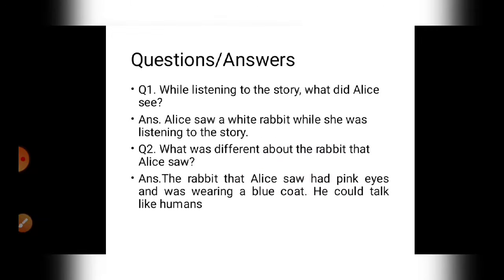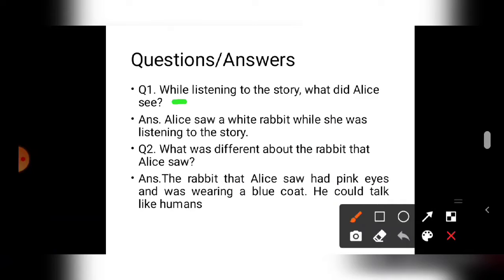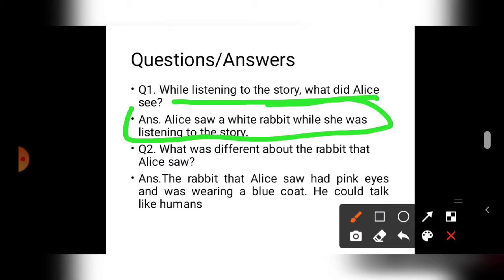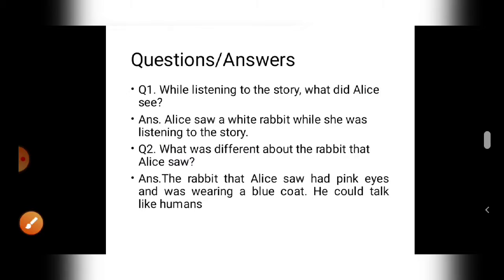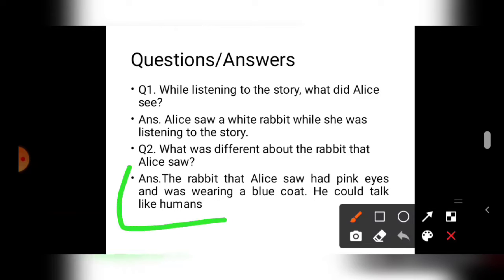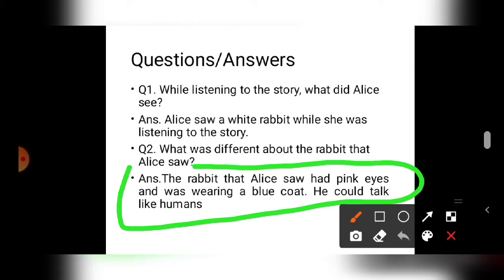Question answer number one: while listening to the story, what did Alice see? Alice saw a white rabbit while she was listening to the story. Question number two: what was different about the rabbit that Alice saw? The rabbit that Alice saw had pink eyes and was wearing a blue coat. He could talk like humans.